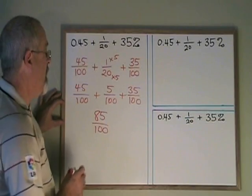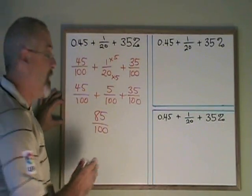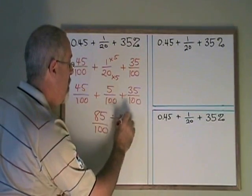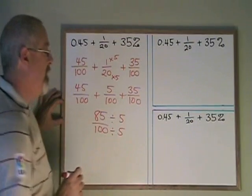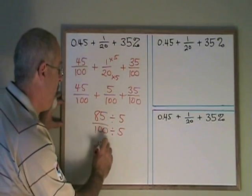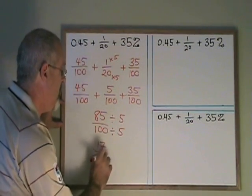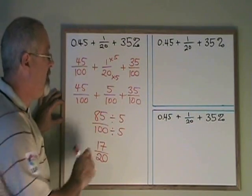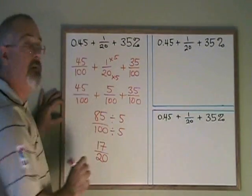This can be reduced though. 85 and 100 have a common factor of 5. If I divide both of them by 5, I end up with 17 over 20, which cannot be reduced further or simplified further. That's my final answer in fraction form.